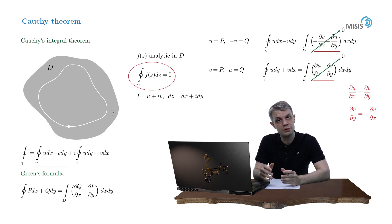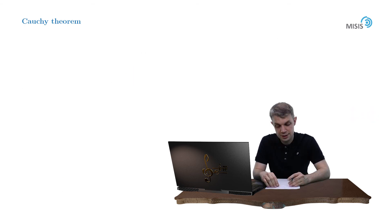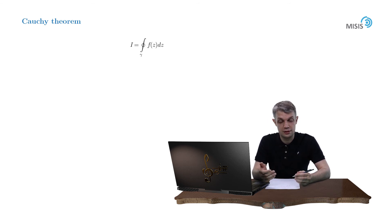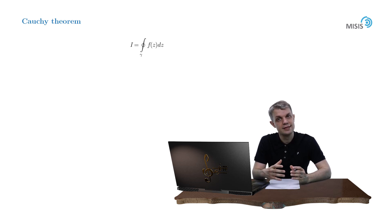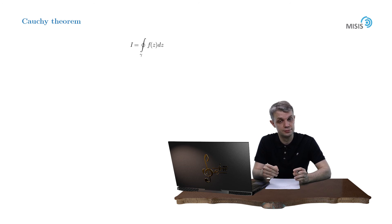The theorem has a very important consequence. Suppose we have some closed contour integral of a function f(z) which is not necessarily analytic inside this contour — then of course this integral doesn't necessarily vanish. But using the Cauchy integral theorem, we can prove that this integral stays the same for any deformation of the contour, as long as the deformation doesn't touch the singularities of the function inside.